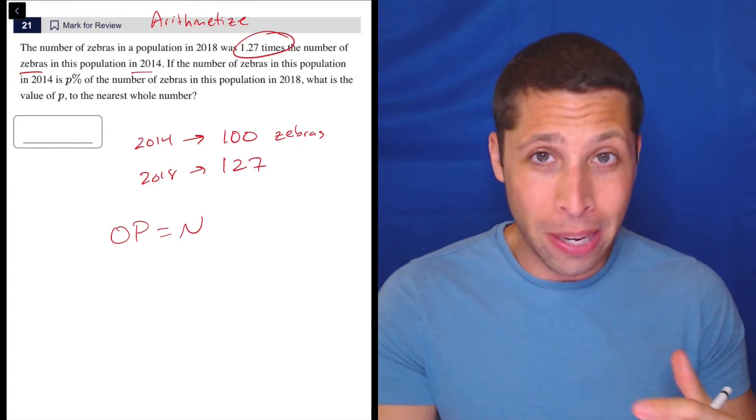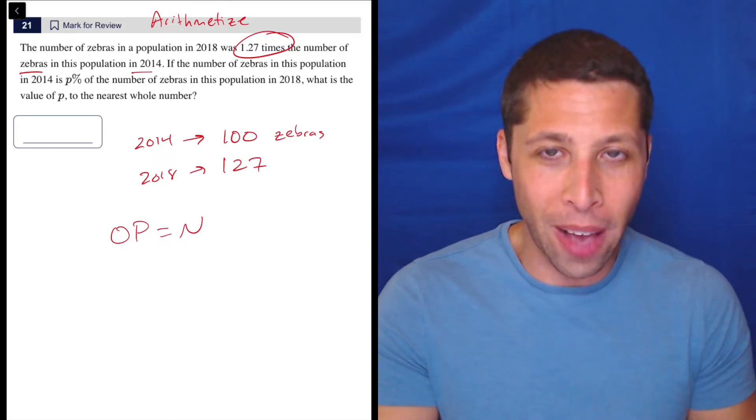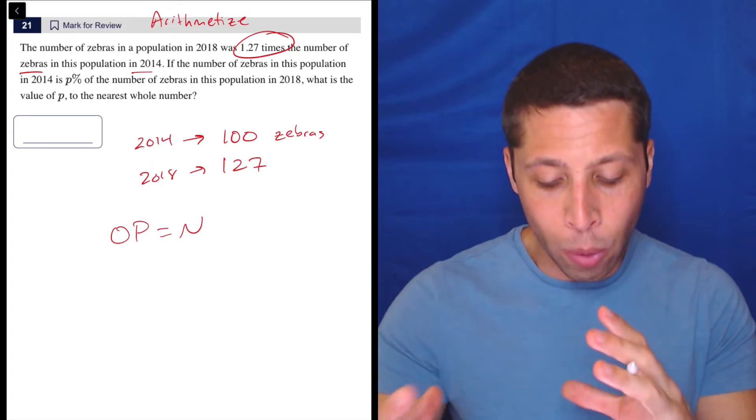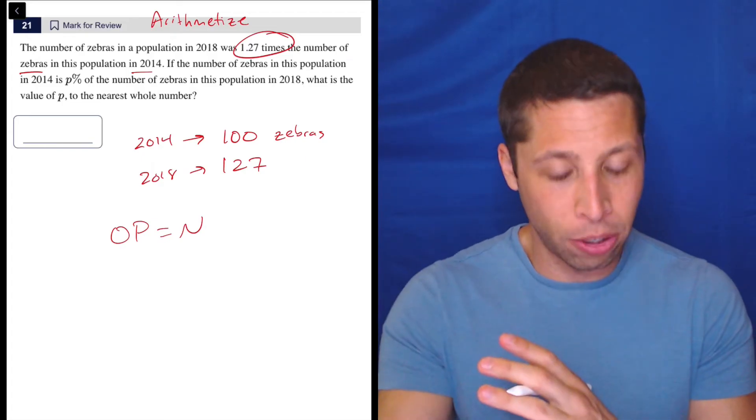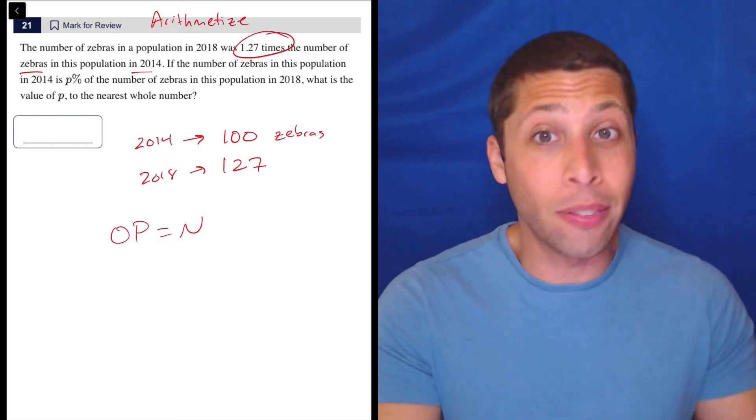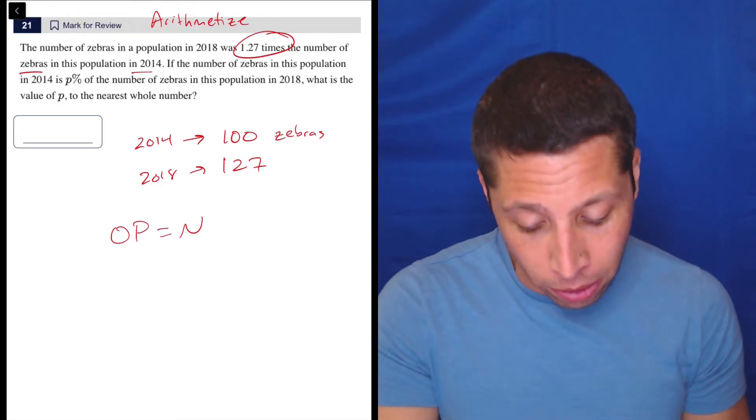Basically, the O stands for the original amount, the P is the percentage, and the E is for equals, and N is the new value. But we've got to be careful because our instinct is to put the O as 2014 because we originally had a hundred zebras. But the way this question is phrased is a little backwards, and that's what makes it a question 21. Even in the first module, question 21 is going to be hard, so we've got to be careful.